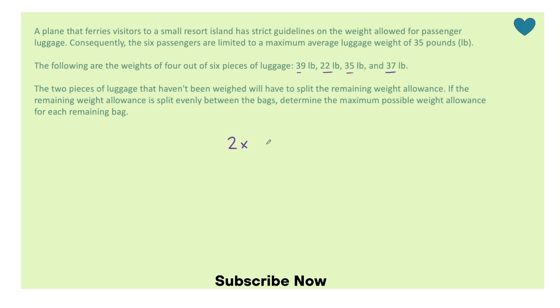So we have two bags. We don't know how much they weigh, but I know that 39 plus 22 plus 35 plus 37, and I'm dividing that by 6, would have to equal an average of 35.